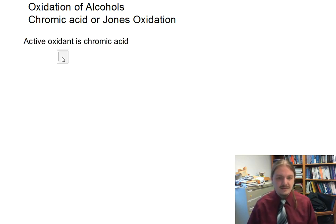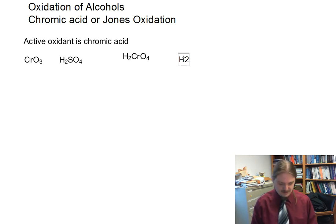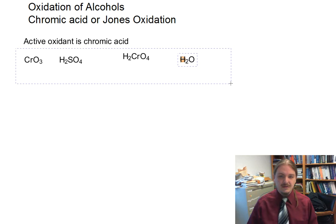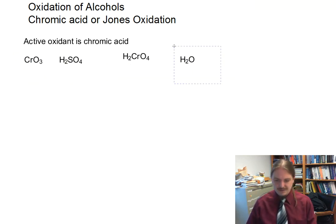Chromic acid looks like this: H2CrO4, but chromic acid doesn't actually exist on its own, and so it needs to be generated in a reaction. So for example, in the reaction of chromium oxide and sulfuric acid, this reaction will proceed and make chromic acid with water and sulfate and some other things as byproducts.